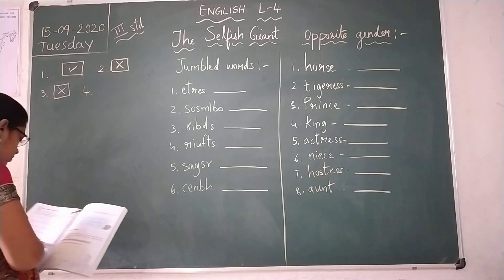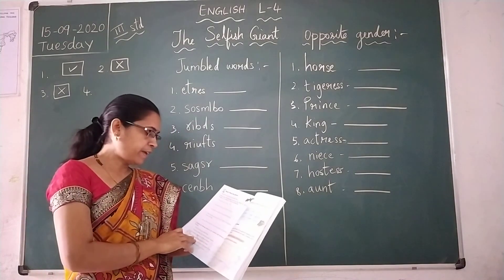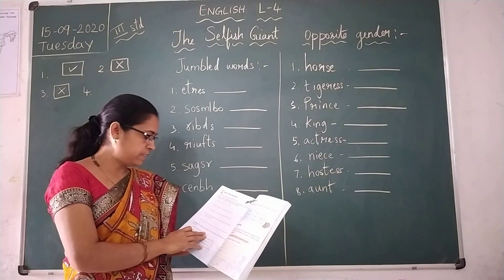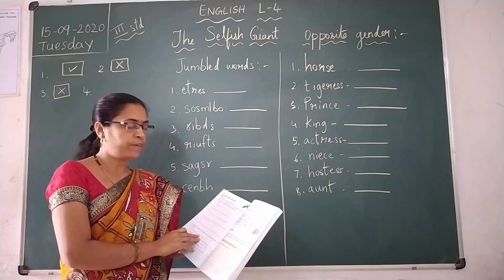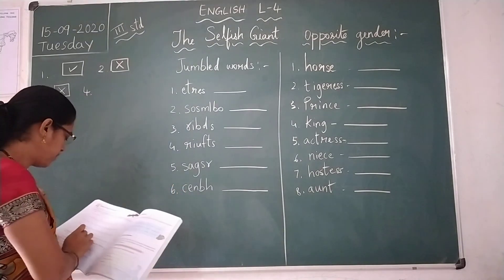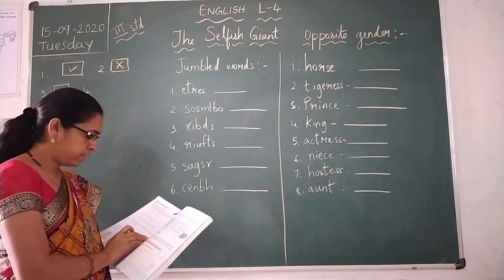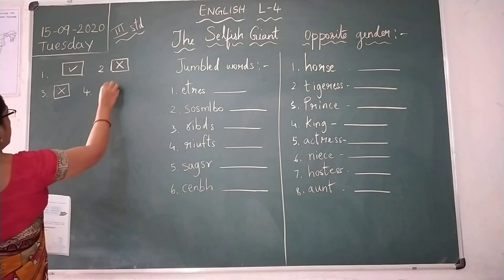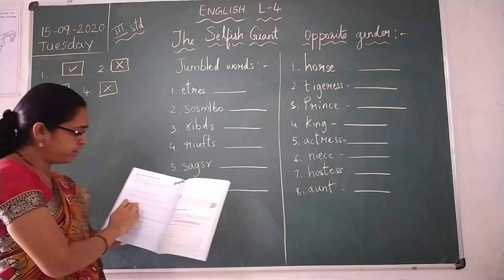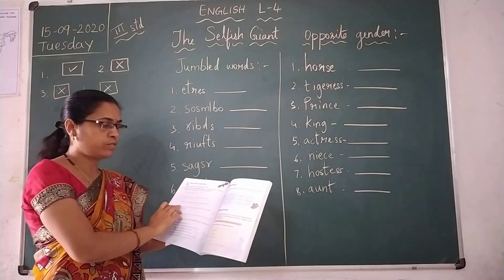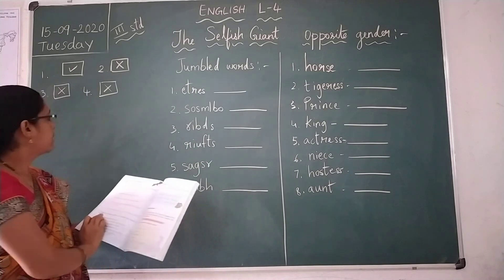Fourth one: When Jane came back and saw the children in his garden, he was very happy. He was not happy — that is wrong. So you have to write the correct statement. We will do that one later.